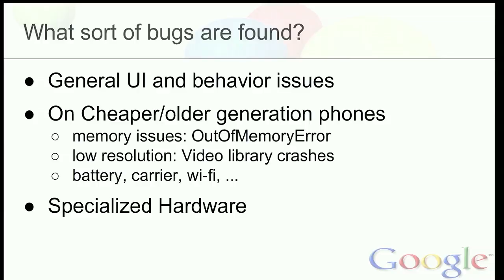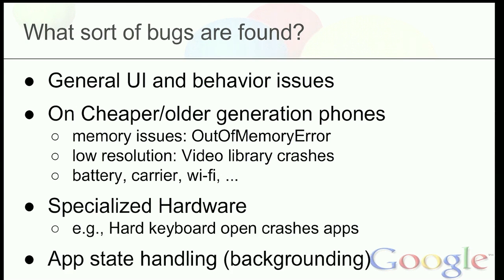There are also battery issues, signals from carriers, Wi-Fi, and so on. There were also issues due to specialized hardware — somebody mentioned they had an app that would crash whenever there was a phone with a physical keyboard and the keyboard came out; the application would crash and they had no idea why. In Android, you also have to handle the activity state. Whenever you load a new app, your app goes into the background, and on older devices, your activity might be terminated because it runs out of memory. So when it comes back up, you need to handle that as well, and this causes a lot of bugs.